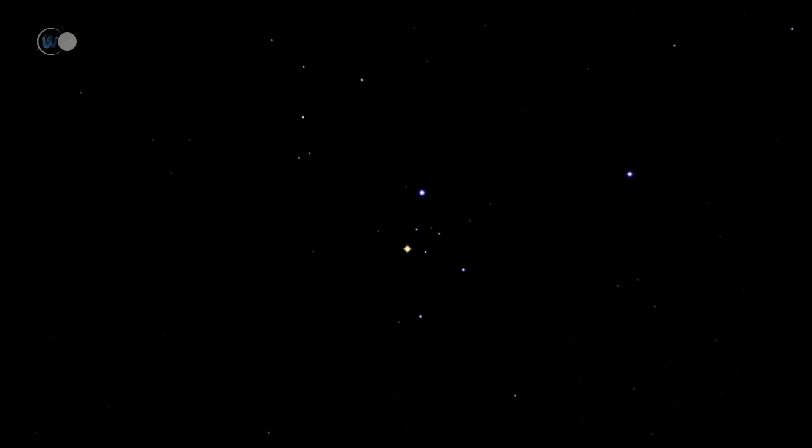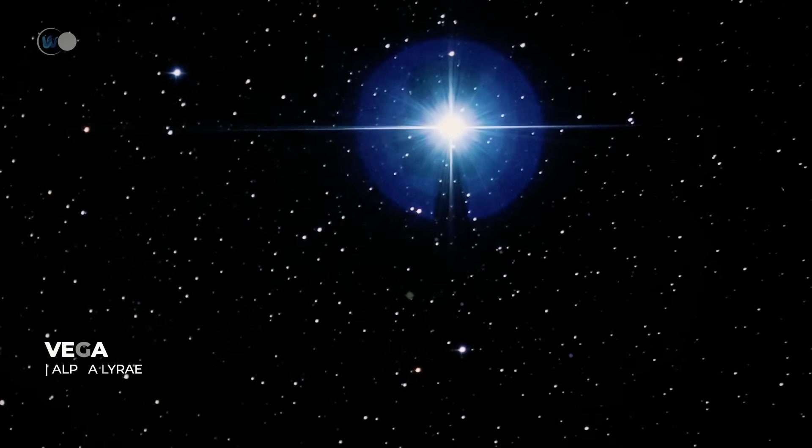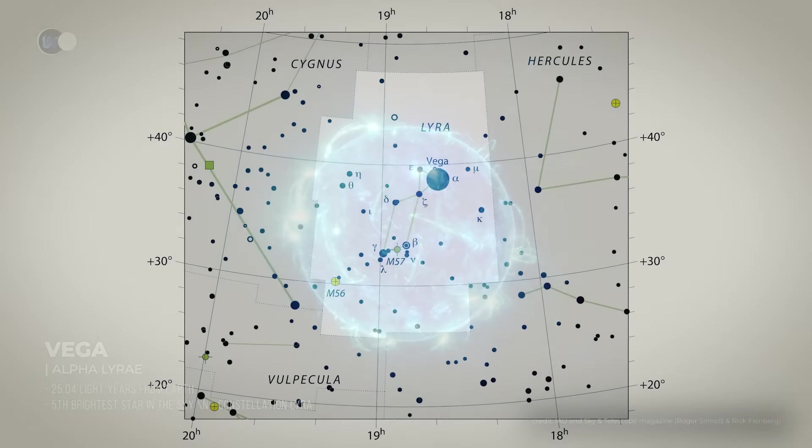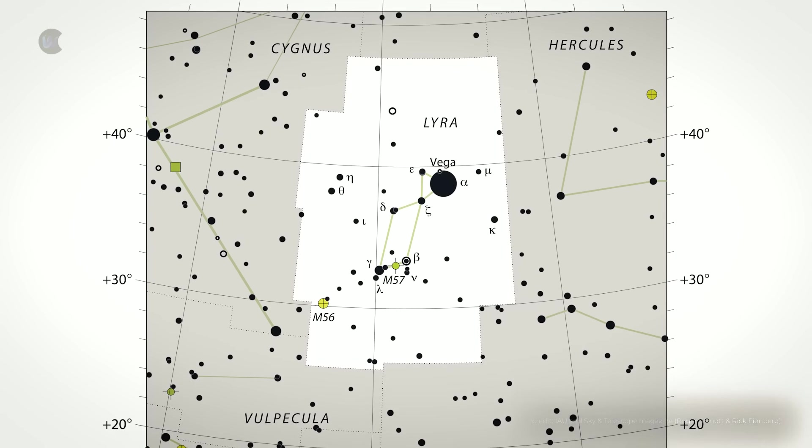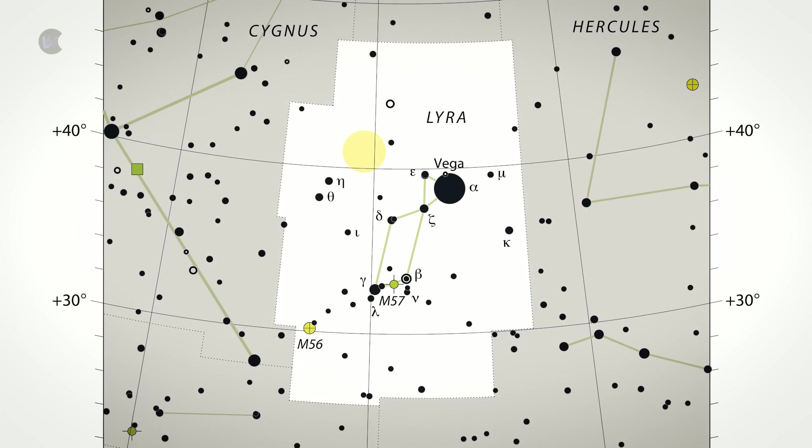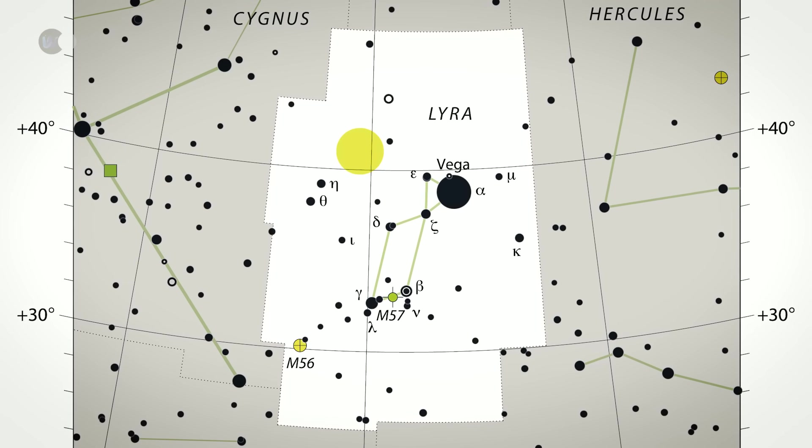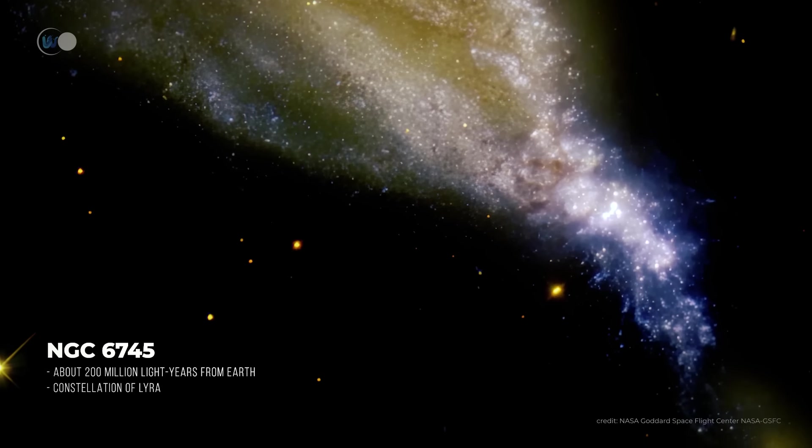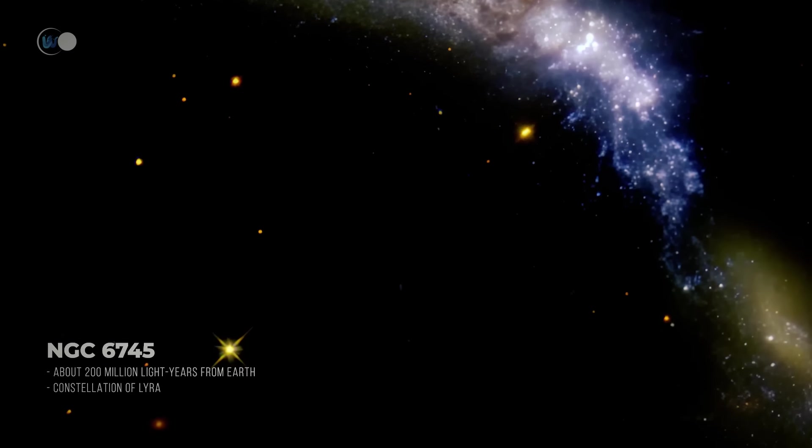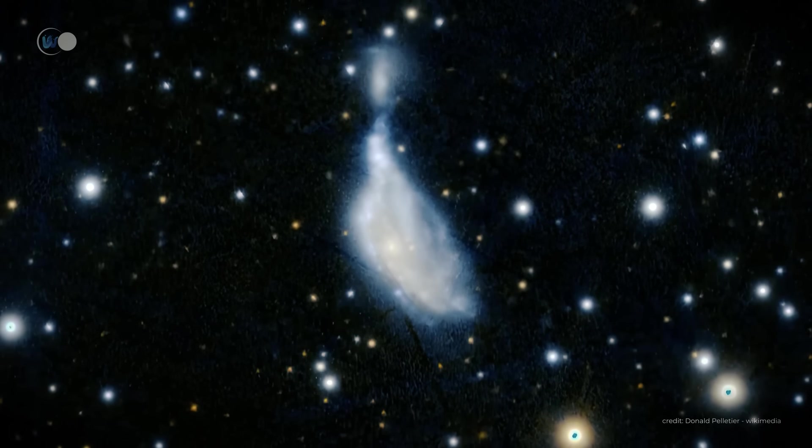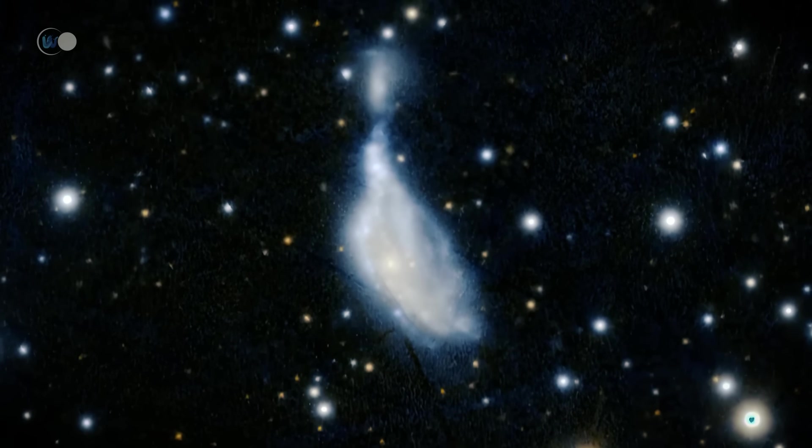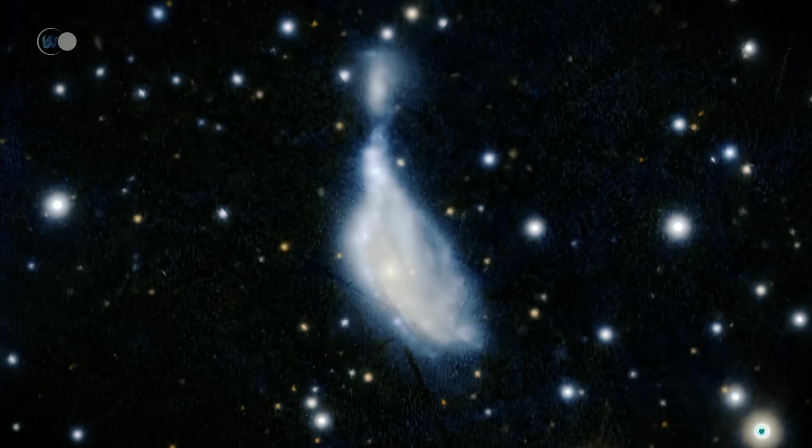The Lyra constellation peaks at midnight in early July, passing close to the zenith at our latitudes. It revolves around its brightest star, Vega. NGC 6745 is a very special member of this constellation, 200 million light-years away. It is a pair of interacting galaxies. It consists of NGC 6745A, the main member, and NGC 6745B, its companion. A few hundred million years ago, the small irregular galaxy, NGC 6745B, would have partially passed through NGC 6745A.